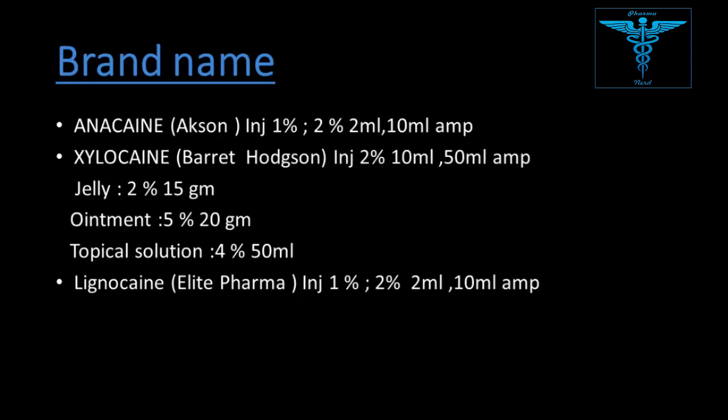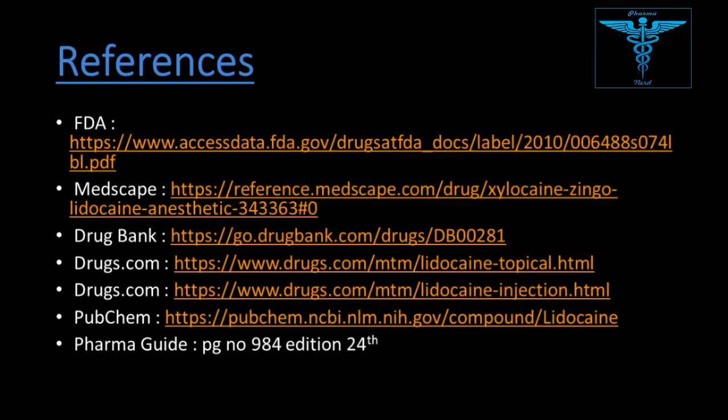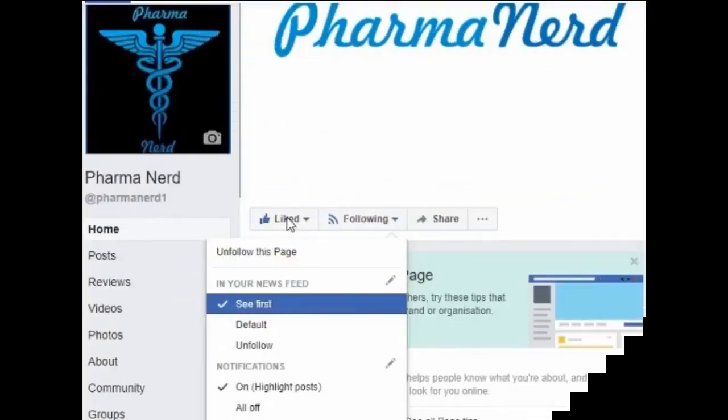Brand names include Anakin, Rilokine, and Lignocaine in various formulations: injection 1% and 2% in 2 ml and 10 ml ampoules, 2% injection in 50 ml ampoules, jelly 2% 15 g, ointment 20 g, topical solution 50 ml 4%, and lignocaine injection 1% and 2% in 2 ml and 10 ml ampoules. Thanks for watching. If you like our content, please share it, like it, and subscribe to our channel.